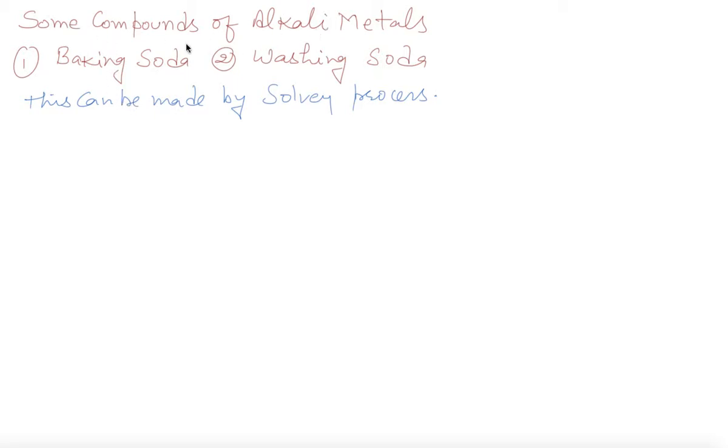Some compounds of alkali metals include baking soda and washing soda. You have studied this in 10th standard. These can be made by the Solvay process, which you have to understand now.